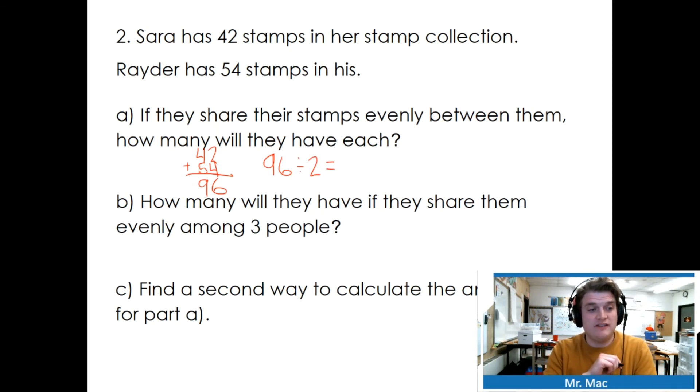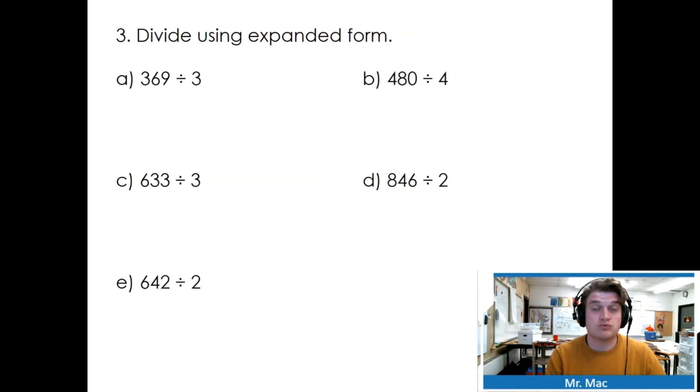How many will they have if they share them evenly among 3 people? So instead of just sharing them with 2 people, you need to share them with 3. The first thing we need to do is write it in expanded form: 3 hundreds, 6 tens, 9 ones. Can we divide these numbers by 3? Well, I know 3 times 3 is 9. We've solved this one a couple times: 60 divided by 3 is 20. 300 divided by 3, that's a huge number. But if you think about hundreds blocks, that's 300 blocks. Our sum is 123.